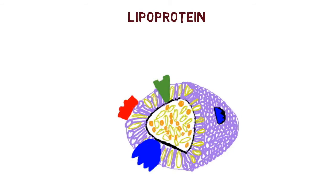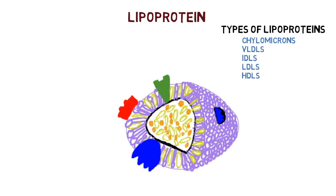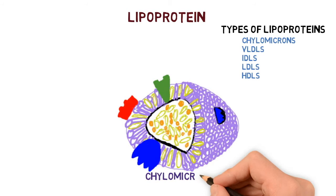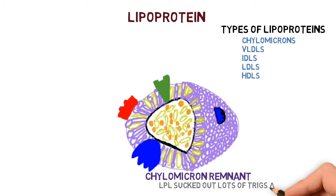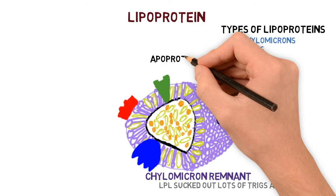As you recall, this is what a lipoprotein molecule looks like, and the types of lipoproteins we have are chylomicrons, VLDLs, IDLs, LDLs, and HDLs. Recall what a chylomicron remnant is — this is what's left over after lipoprotein lipase has sucked out lots of triglycerides already.